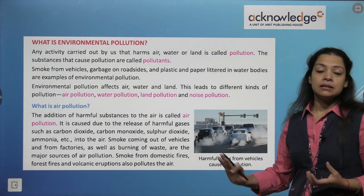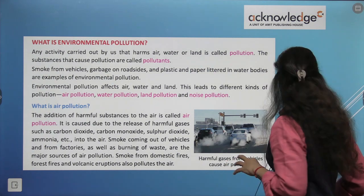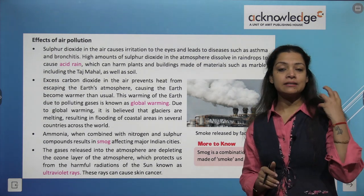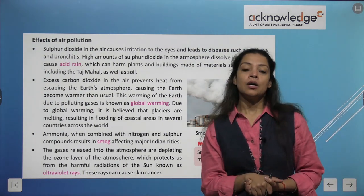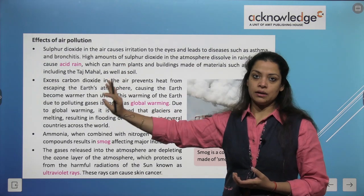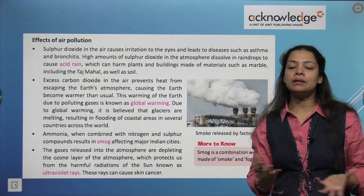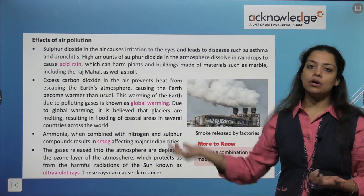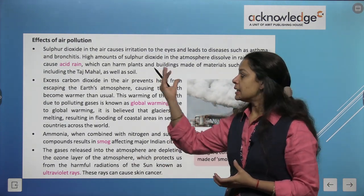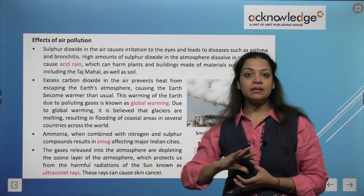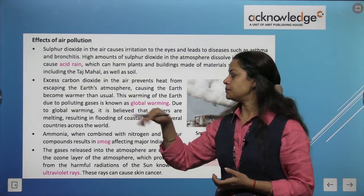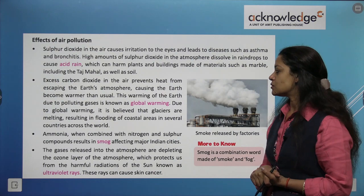These harmful gases from vehicles that we see every day in our lives are causing major pollution. Now the effects of air pollution: sulfur dioxide in the air causes irritation to the eyes and leads to diseases such as asthma and bronchitis. High amounts of sulfur dioxide in the atmosphere dissolve in rainwater and cause acid rain, which harms plants and buildings. Excess carbon dioxide in the air prevents heat from escaping the earth's atmosphere, causing the earth to become warmer than usual.